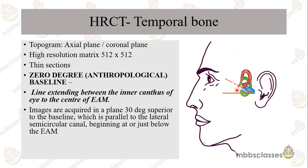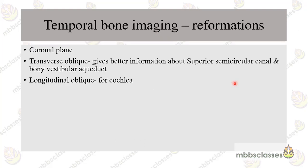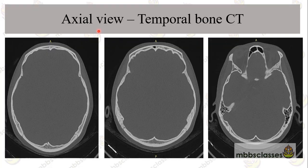Images are acquired in a plane 30 degrees to this baseline, so that the images are captured parallel to the lateral semicircular canal. Reformations are done in the coronal plane. There are several other planes of reformation sometimes needed to see special structures: the transverse oblique view gives better information about the superior semicircular canal and the bony vestibular aqueduct, and the longitudinal oblique view gives very good information about the bony cochlea — the cochlear turns and shape.